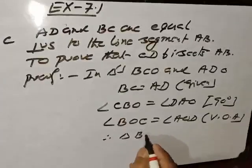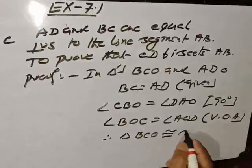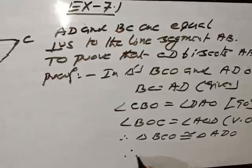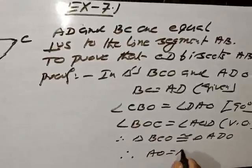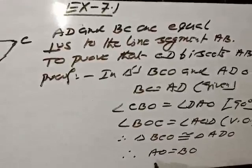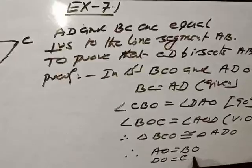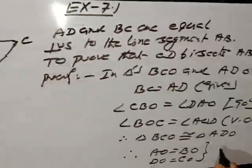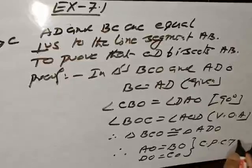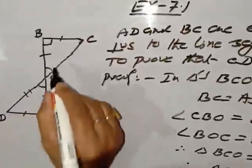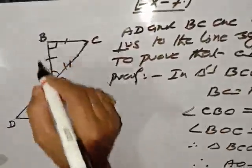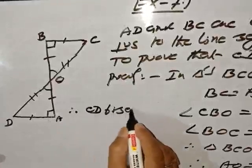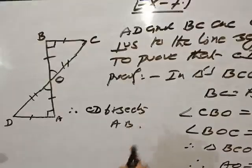Therefore, triangle BCO is congruent to triangle ADO. If they are congruent, then what happens? Therefore, AO is equal to BO and DO is equal to CO by CPCT, congruent parts of congruent triangles. If this side is equal to this side and this side is equal to this side, automatically CD bisects AB. Therefore, CD bisects AB.